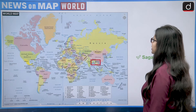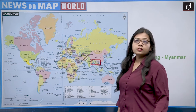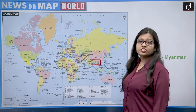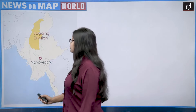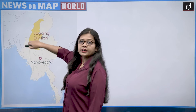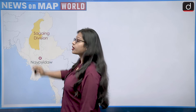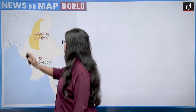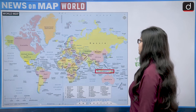The second pair is Sagaing–Myanmar. Myanmar is a Southeast Asian country that shares its border with India on the northeastern side. The Sagaing Division of Myanmar lies to the north of Myanmar and shares its border with the northeastern states of India — Manipur, Nagaland, and Arunachal Pradesh. Sagaing Division is considered the gateway to India from Myanmar's side. So this pair is also correct.